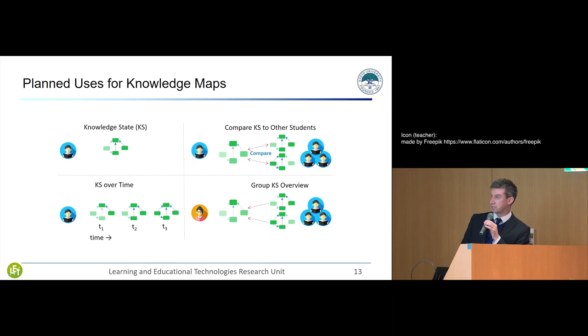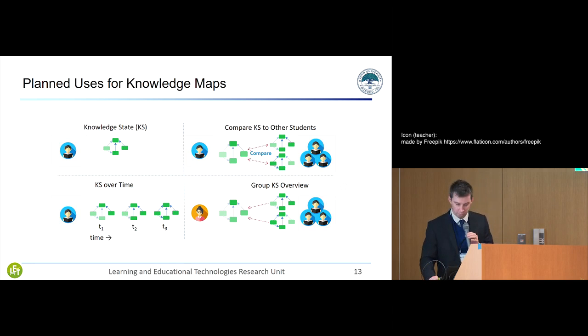And how would we use these knowledge maps? One simple way is to basically give the knowledge map to a student and say this is your current knowledge state. They can see what maybe they don't know yet and what they can potentially study. We can also show them their progression over time and compare to other students. It also gives teachers an opportunity to see an overview of their class. Maybe they need to specifically go into detail on a certain concept because students haven't picked it up.